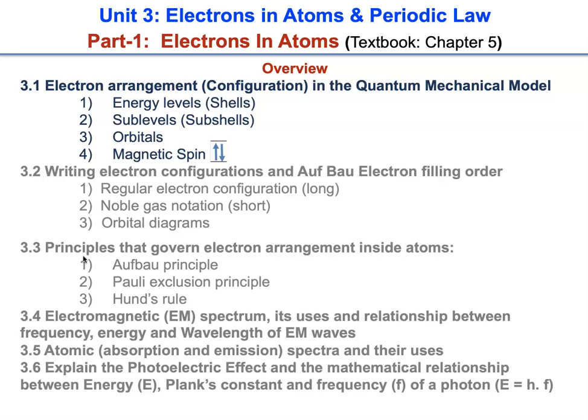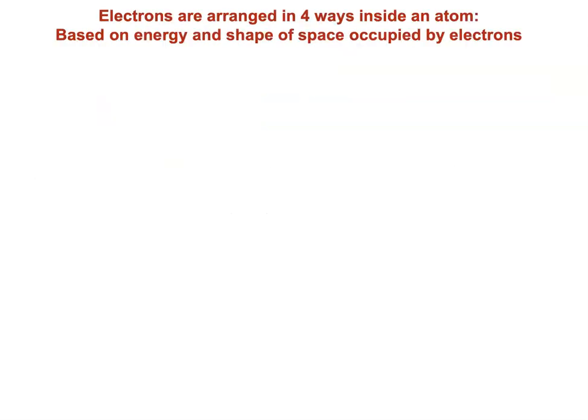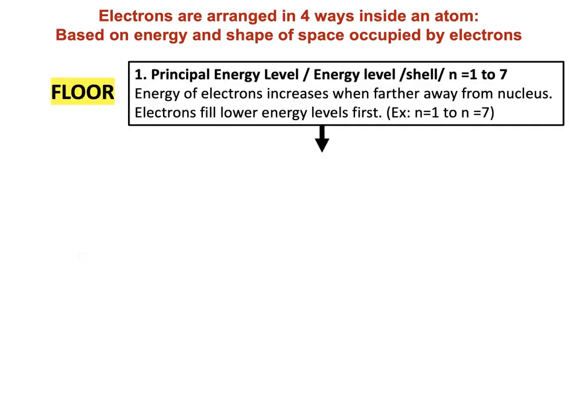In part 2 we will be learning about the periodic table and periodic properties of elements. Electrons are arranged in four ways inside the atom based on energy and the shape of the space occupied by electrons. You can think of these arrangements as the rooms that you find inside an apartment in an apartment building.